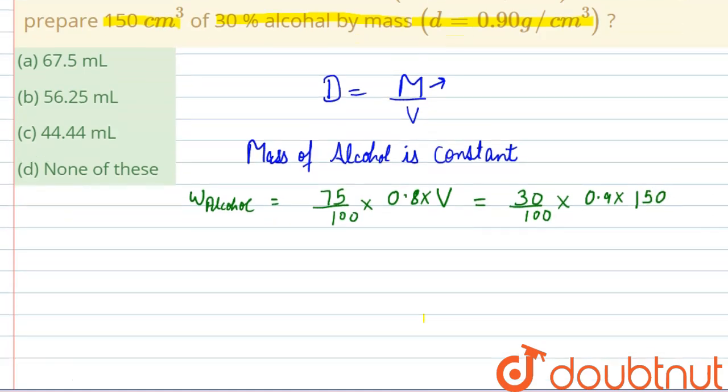Now from here, after solving, we will get the value of V that will be equal to 67.5 mL. So this will be the volume of alcohol. This is the answer.